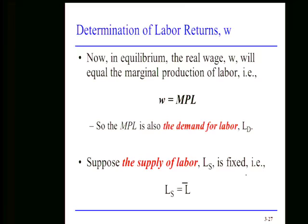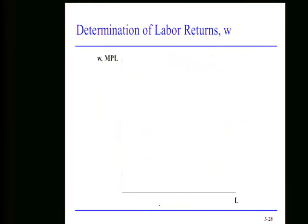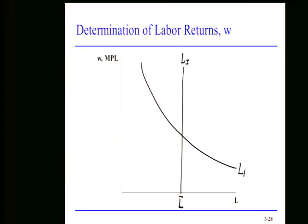Just like the marginal product of capital was the demand for capital, the marginal product of labor is the demand for labor. We'll keep with our fixed labor supply for now — you'll have an opportunity to relax that on your problem set. Here's our labor supply, here's our labor demand, which is the marginal product of labor. This tells us what the equilibrium real wage will be.